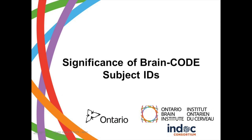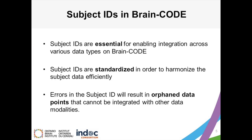Subject IDs are an essential component for enabling the integration of different data types across platforms and systems within BrainCode. Within data capture systems, subject IDs follow a standard format to promote the harmonization of subject data. All participants will have a standard BrainCode ID, used when entering data into any subsystem and as an integral component for the integration and federation of multiple data types. Errors in the subject ID will result in orphan data points that cannot be integrated with other data modalities.